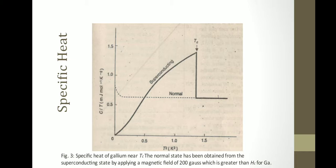Specific heat. Specific heat of gallium near Tc. The normal state has been obtained from the superconducting state by applying a magnetic field of 200 gauss, which is greater than Hc for gallium. This diagram shows Cv/T per mole per kelvin squared along the y-axis. We have seen the normal metal, and after that we will be able to get the normal material.